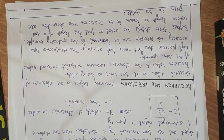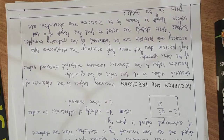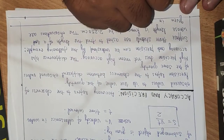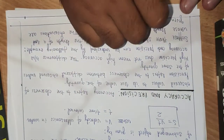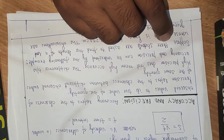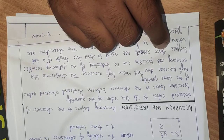Accuracy means how close you are to the actual value of the quantity — how close your observed value is to its true value. For example, if your answer should have been 10, how close to 10 are you? The closer you are, the greater the accuracy. If 10 was expected and 10 came, that is 100% accuracy. If something less comes, accuracy is not 100%.